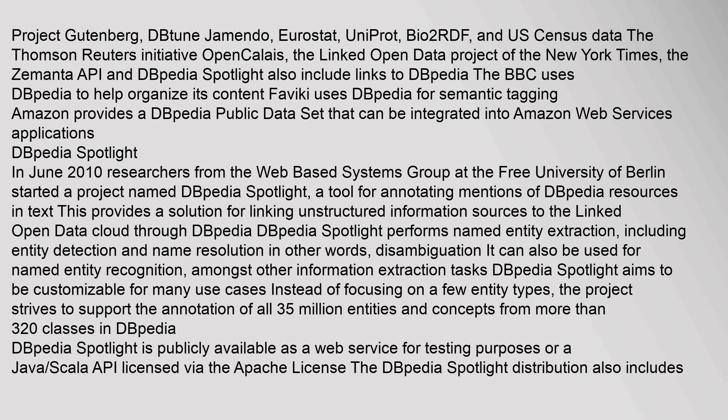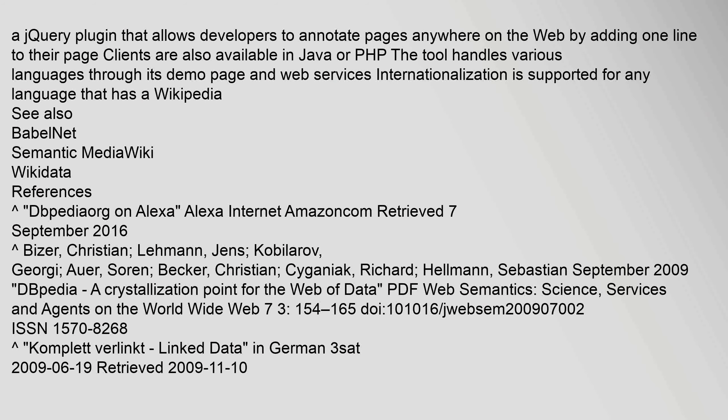In June 2010, researchers from the web-based systems group at the Free University of Berlin started a project named DBpedia Spotlight, a tool for annotating mentions of DBpedia resources in text. This provides a solution for linking unstructured information sources to the linked open data cloud through DBpedia. DBpedia Spotlight performs named entity extraction, including entity detection and name resolution — in other words, disambiguation. It can also be used for named entity recognition, amongst other information extraction tasks. DBpedia Spotlight aims to be customizable for many use cases, striving to support annotation of all entity types. A jQuery plugin allows developers to annotate pages anywhere on the web by adding one line to their page. Clients are also available in Java or PHP, and the tool handles various languages through its demo page and web services.